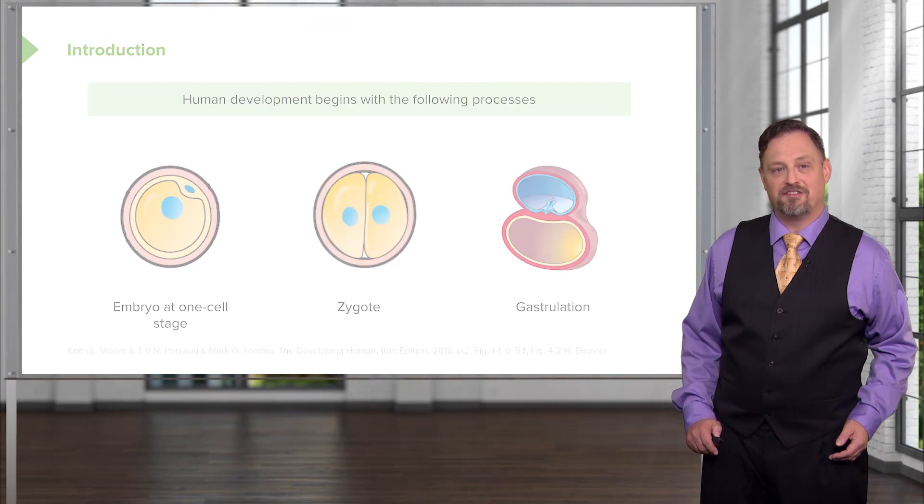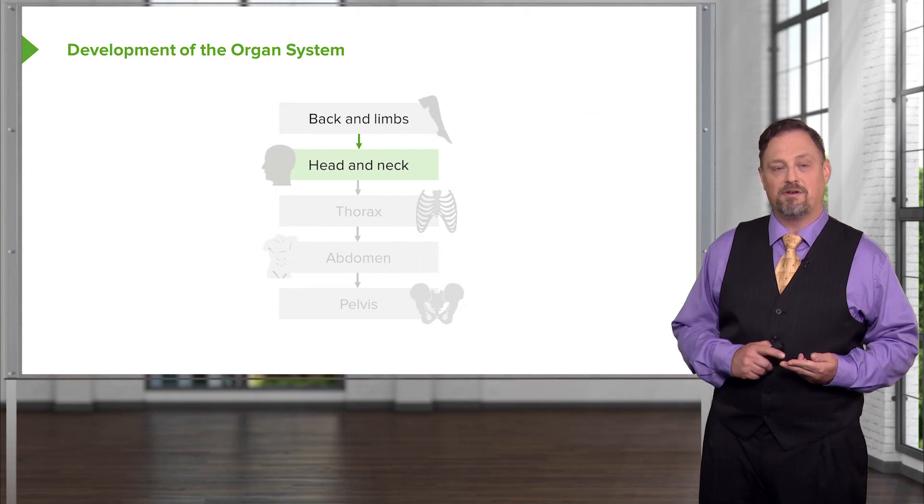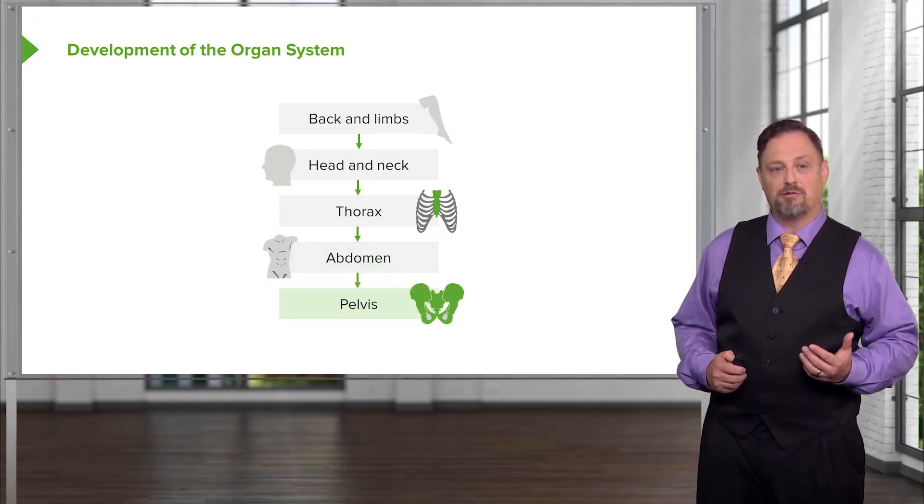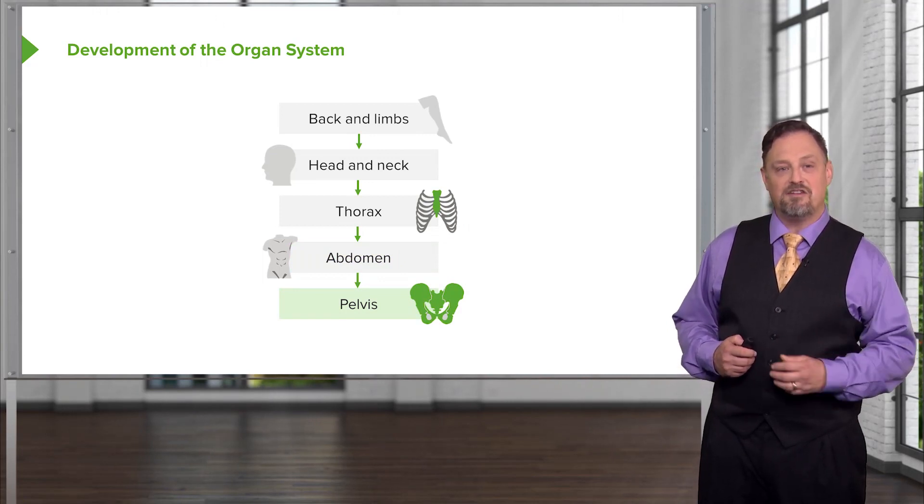Starting with the back and limbs, we'll then move to the head and neck along with the formation of the nervous system, then to the thorax where we'll investigate the cardiovascular and respiratory systems formation, then to the abdomen where we'll see how the gastrointestinal tract and all of its glands form, migrate, and take up their mature position. Then we'll move into the pelvis where we'll see the reproductive system and renal systems develop, migrate, and change depending on whether we're forming a male or female body.